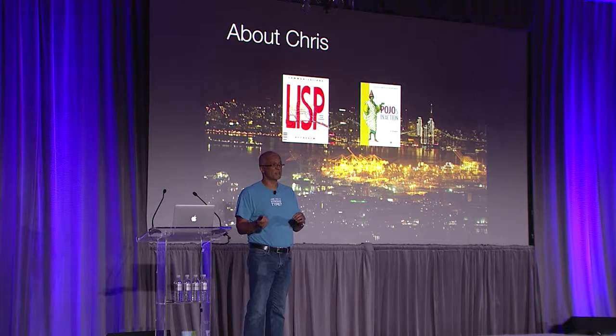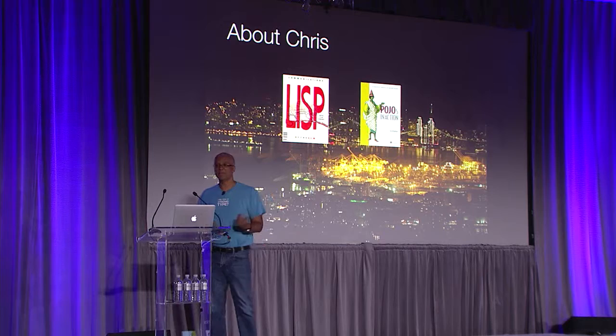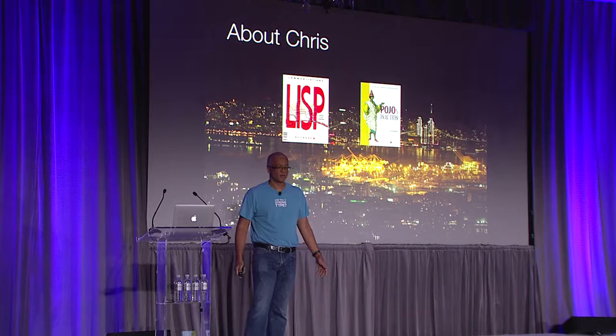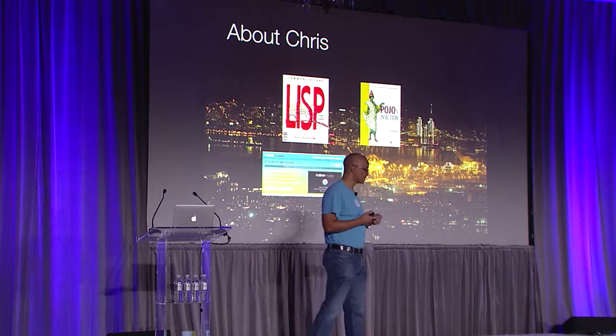Back in 2006, my book, POJOs in Action, came out. It was all about building applications with Spring and Hibernate, which back then were revolutionizing enterprise Java development. Then in 2007, I started tinkering around with EC2, very much in the early days, got into the beta program, and created an open source project for provisioning Java applications, which turned into my startup Cloud Foundry — a Java PaaS for deploying applications on Amazon EC2.